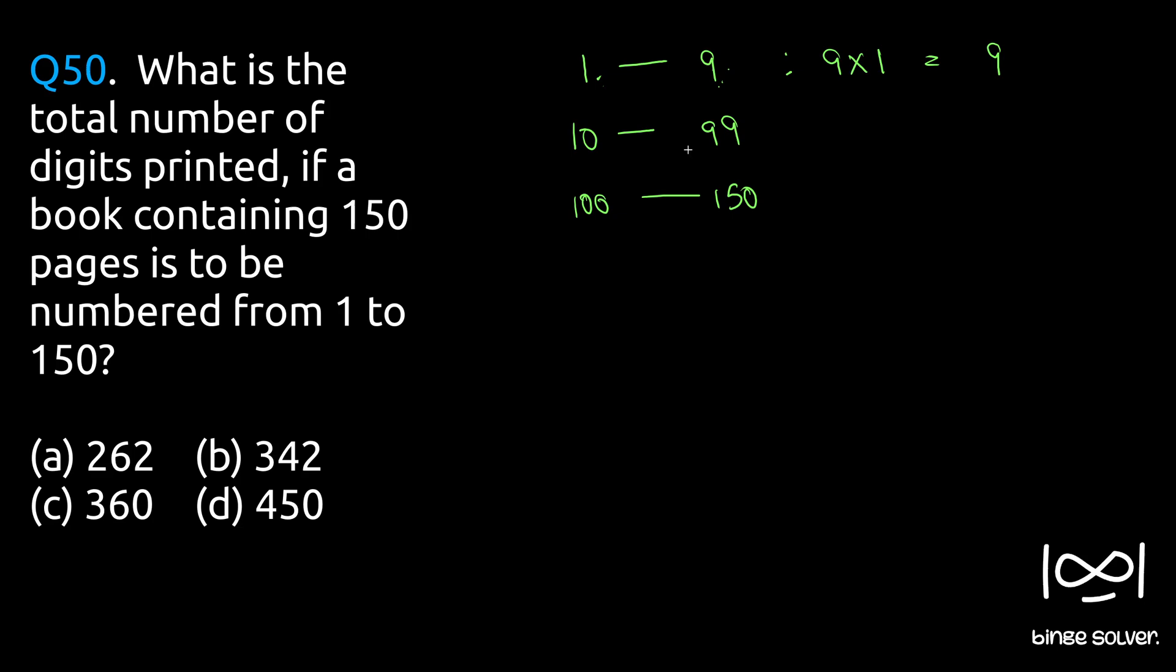For pages 10 to 99, we calculate 99 minus 10 plus 1. That's 89 plus 1, which equals 90 pages. For each page we need two digits, so 90 times 2 equals 180 digits.